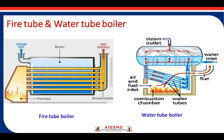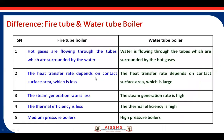We can see the difference between water tube and fire tube boilers. In a fire tube boiler, hot flue gases flow through the tubes which are surrounded by water. In a water tube boiler, water flows through the tubes which are surrounded by hot gases. The heat transfer rate depends on contact surface area, which is less in fire tube boilers and greater in water tube boilers — that is why water tube boilers are used for industrial purposes.